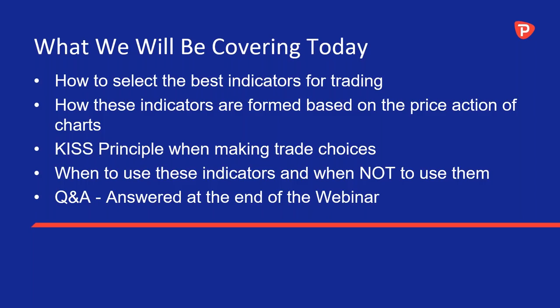We're going to be using the KISS principle — keep it simple, stupid — which I always refer back to when trading. It's very important to keep it as simple as possible because the simple stuff does work. A lot of people overcomplicate their charts. When we coach people who are struggling at trading, we'll often load up their charts and they've got 10 different indicators, and the actual chart is just a little slither at the top.